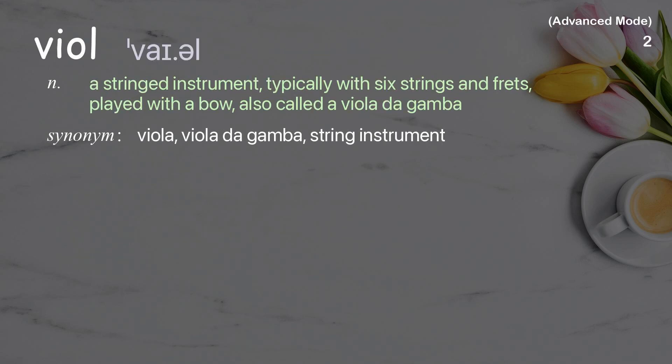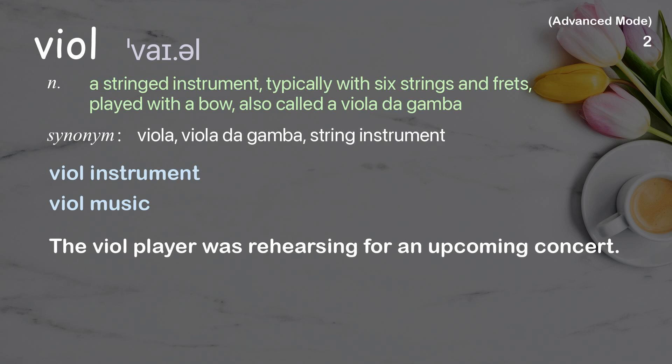Viol: A stringed instrument, typically with six strings and frets, played with a bow, also called a viola de gamba. Examples: Viol instrument. Viol music. The viol player was rehearsing for an upcoming concert.